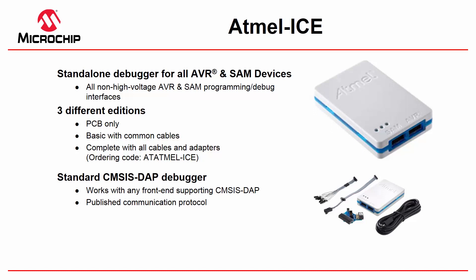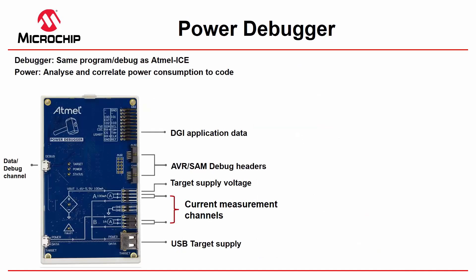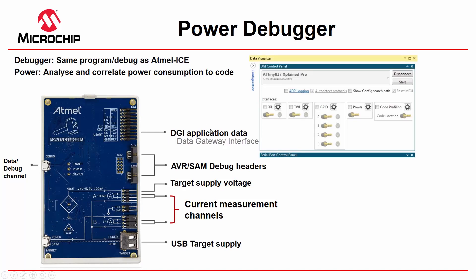The Power Debugger has a number of major use cases: to supply and measure power of the application, separately measure MCU and solution power, measure the power of a USB application, and visualize and correlate application data. It has the same program and debug capability as the Atmel ICE, but also gives the ability to analyze and correlate power consumption to code by getting DGI application data from the application.